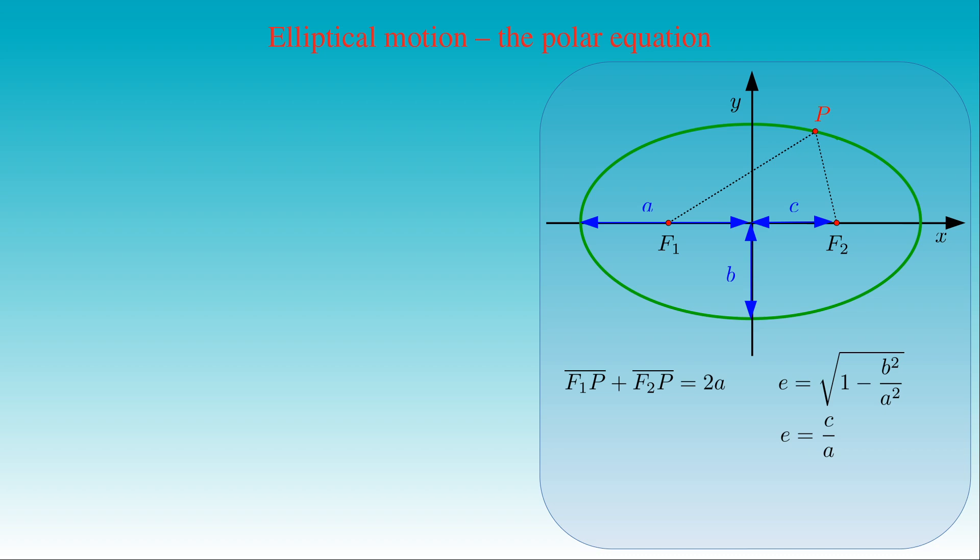If we choose the fixed point F1, the position vector R pointing to the point P from the point F1 describes the instantaneous position of the moving body. Here theta is the central angle measured between the major axis and the vector R.